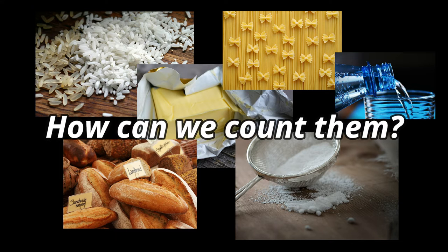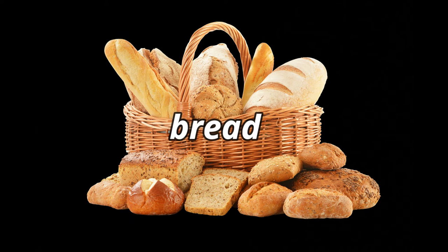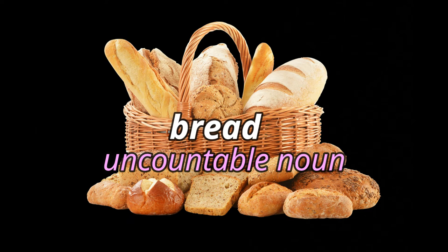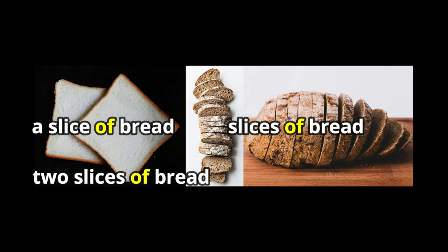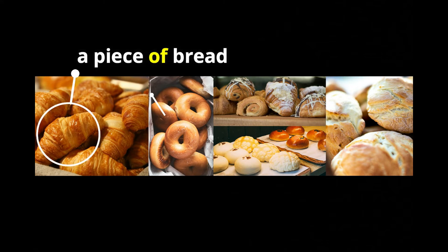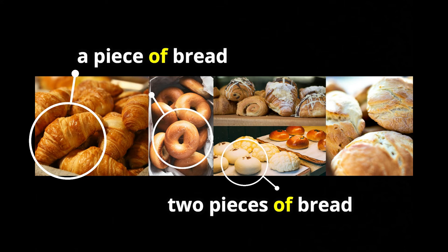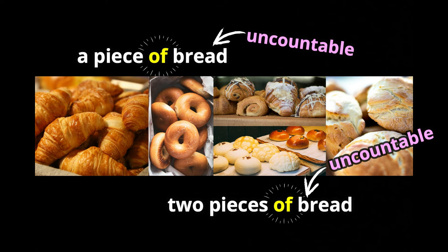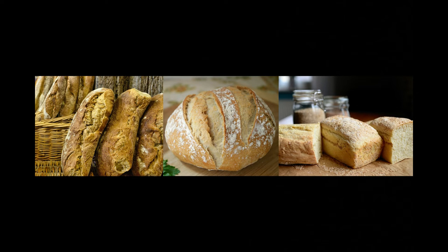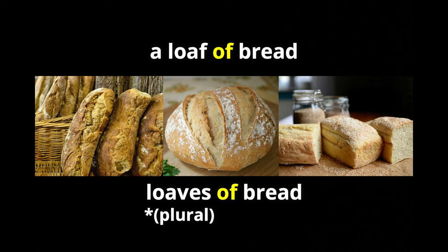Let's begin with a very common uncountable noun: bread. Now let's say you have some bread and you want to tell someone exactly how much you have. We know that bread is uncountable, but we can count a slice — one slice of bread — or slices of bread, maybe two or three slices. Or we can say a piece of bread or two pieces of bread. When we use that structure, it's always 'of the uncountable noun.' The whole bread we call a loaf of bread, or loaves of bread — that's the plural of loaf.